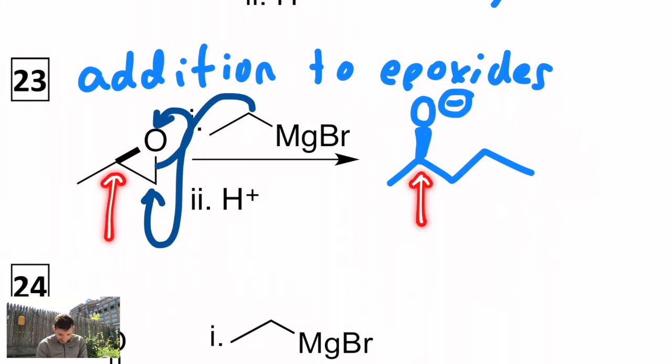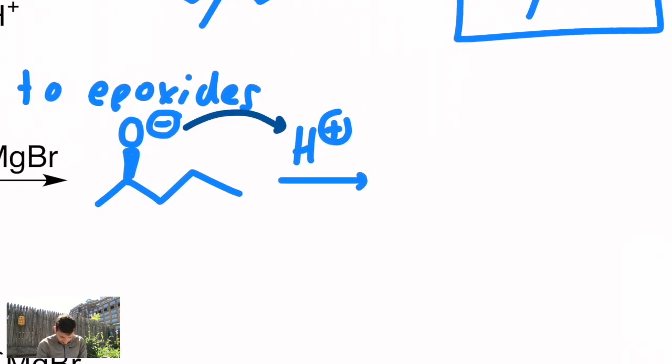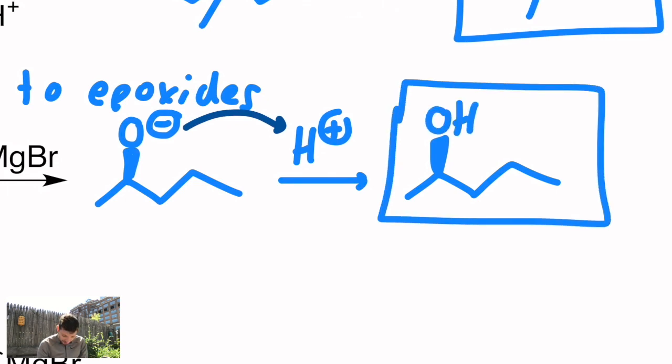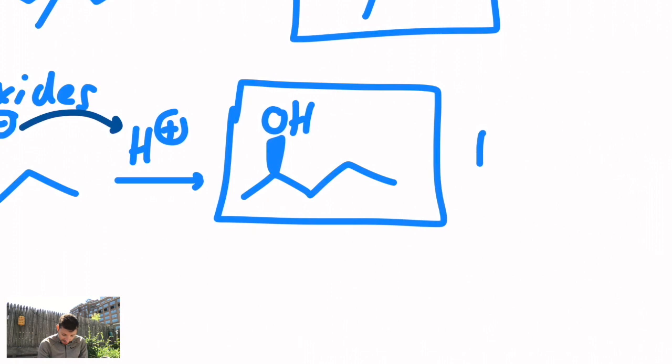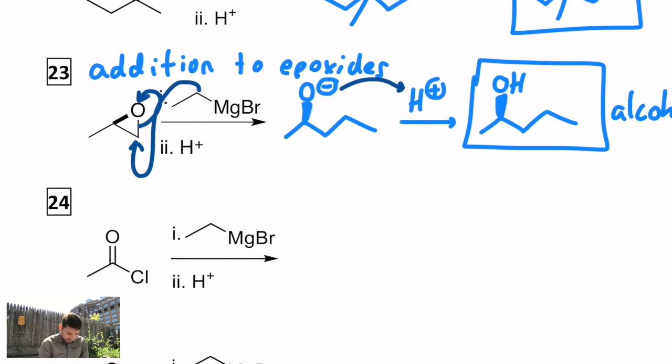Notice there's no change in the stereochemistry at that particular carbon. So I don't change anything about the stereochemistry there. What would happen next is it would protonate? And you get your alcohol. This one happens to be secondary. But depending on what the substitution of the epoxide is, you can get, frankly, all kinds of alcohols. Primary, secondary, or tertiary. Just change how substituted the epoxide is.